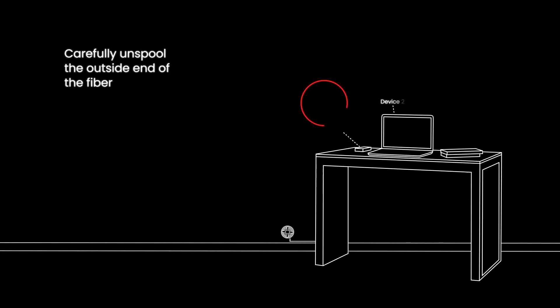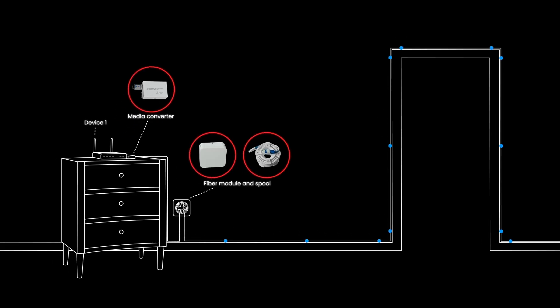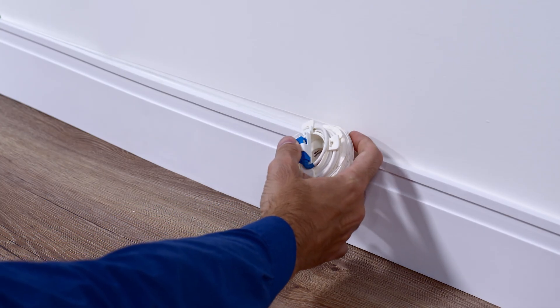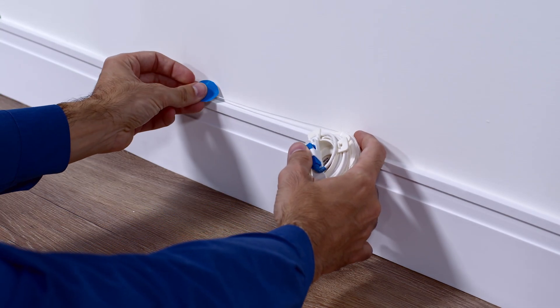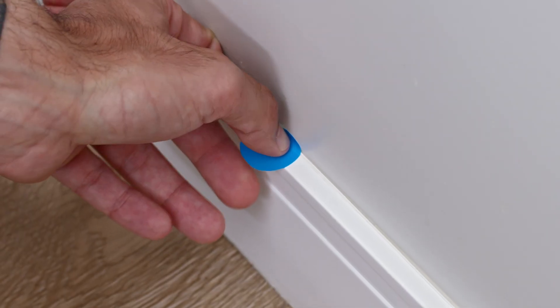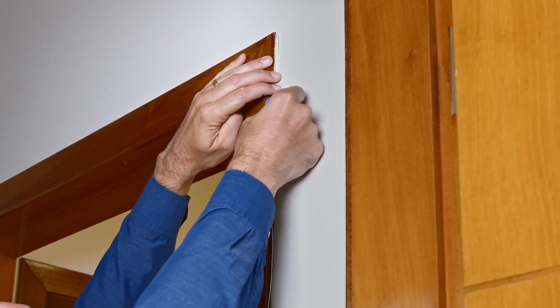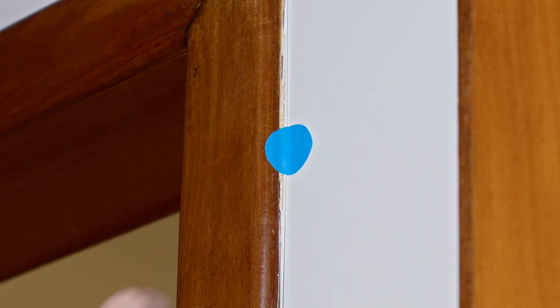Carefully unspool the outside end of the fiber, pulling it gently along the path, temporarily securing the fiber to the wall with pieces of painter's tape. Be careful not to step on the fiber or remove the connector covers. The fiber cord should easily unspool. There should be little to no tension on the cord. If there is resistance, stop pulling and locate the source of resistance before continuing.